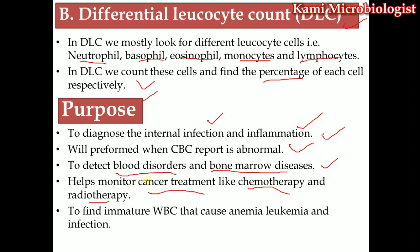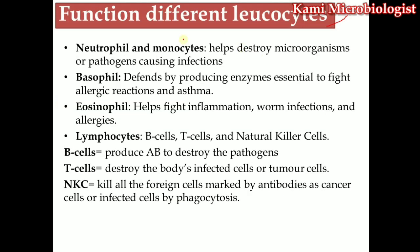DLC is also used to monitor cancer treatment — for example, to determine whether radiotherapy or chemotherapy is working, since we can easily see leukemia cells and the numbers of different leukocytes. It is also used to find out immature forms of white blood cells — immature neutrophils, basophils, eosinophils, lymphocytes, and monocytes — that can cause anemia, leukemia, and infection.